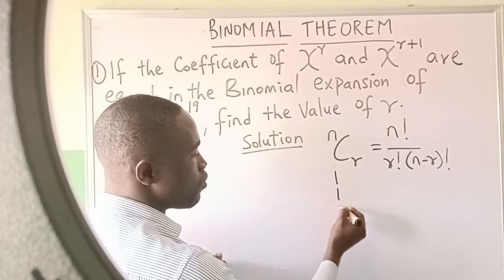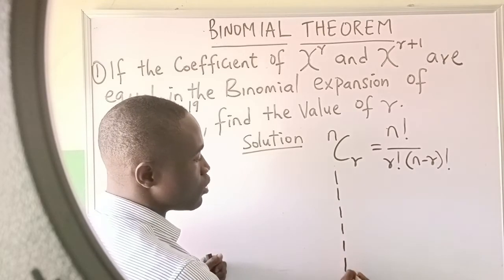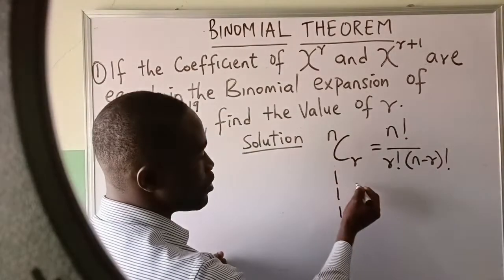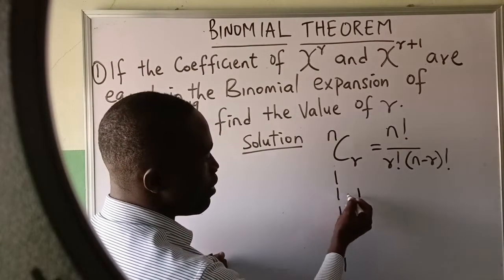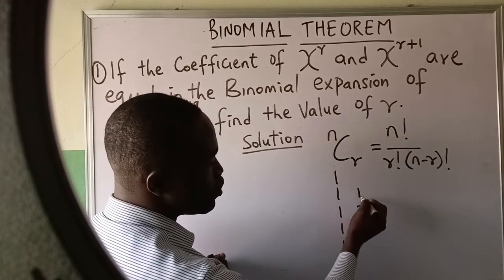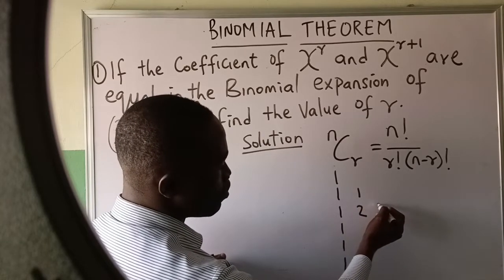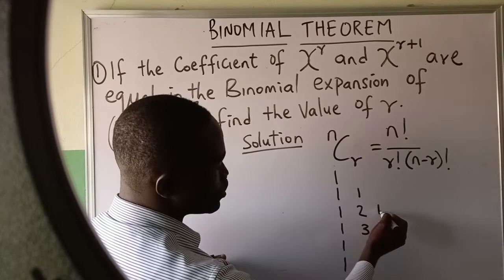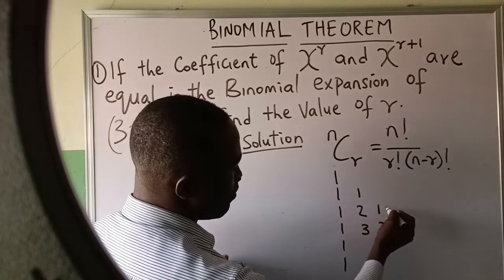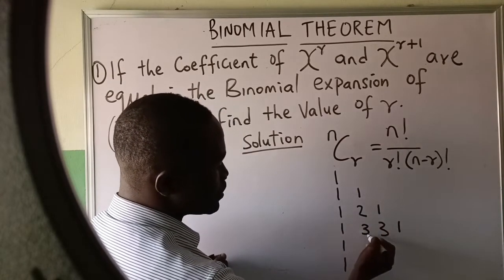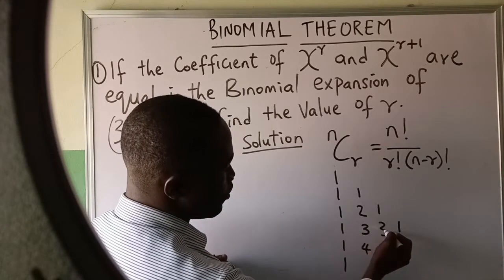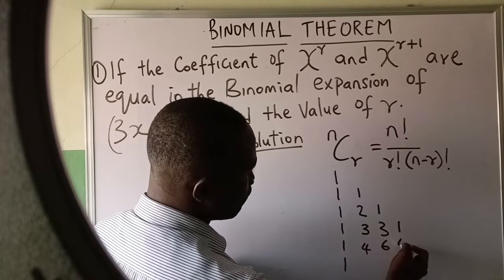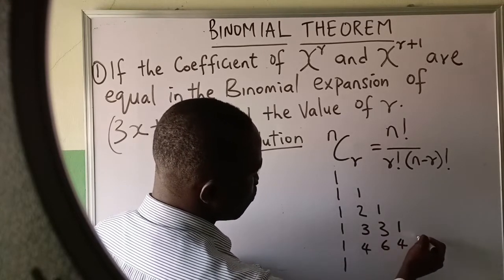Just write ones down the sides: one, one, one, one, one, one, one. Then fill in: one plus zero is one; one plus one is two; one plus zero is one; one plus two is three; two plus one is three; one plus zero is one; one plus three is four; three plus three is six; three plus one is four; one plus zero is one.